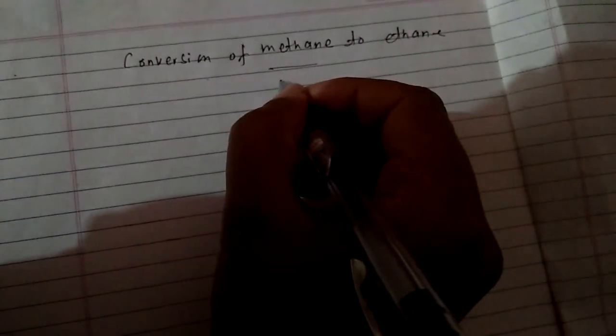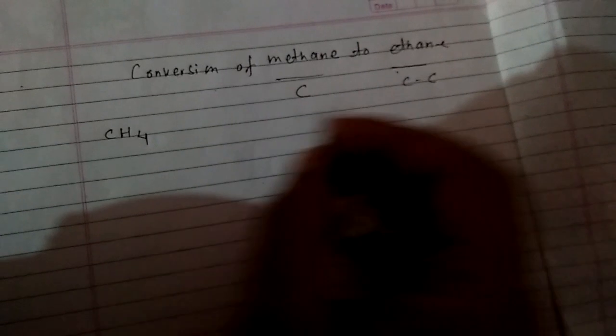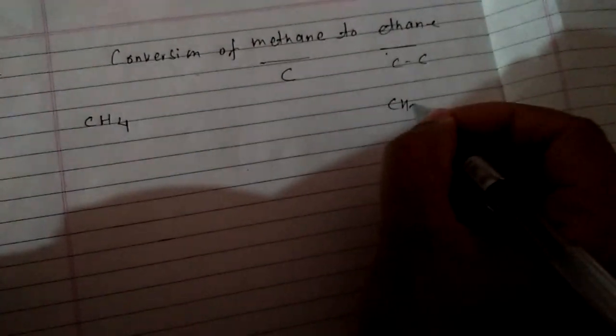Conversion of methane to ethane. Methane contains one carbon and ethane contains two carbons. Let us write the molecular formula of methane and ethane.